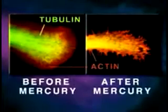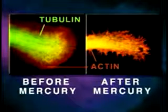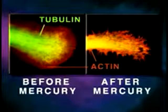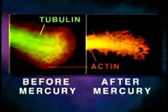Shown here is a neurite growth cone stained specifically for tubulin and actin, before and after mercury exposure. Note that the mercury has caused disintegration of tubulin microtubule structure.